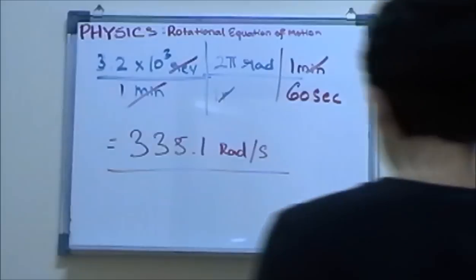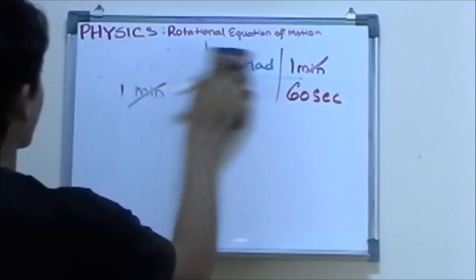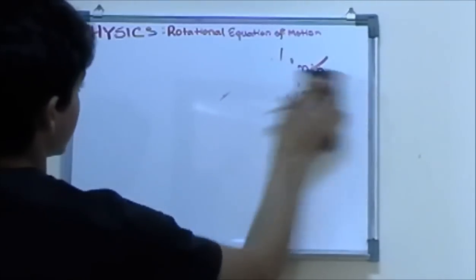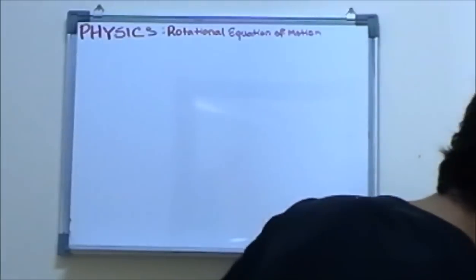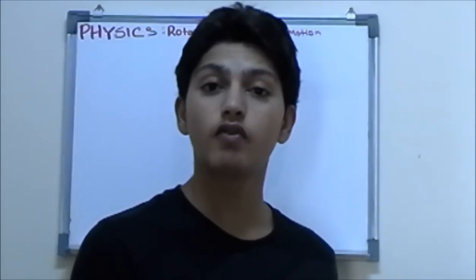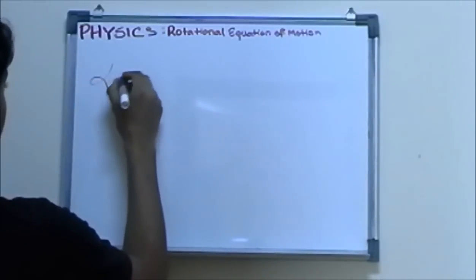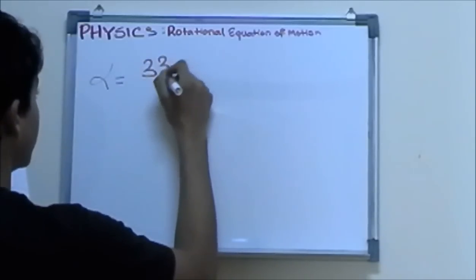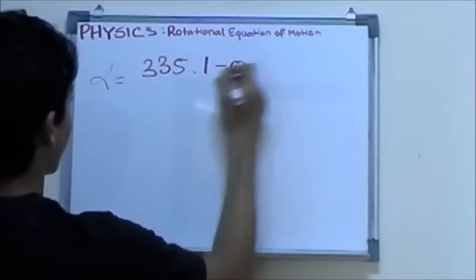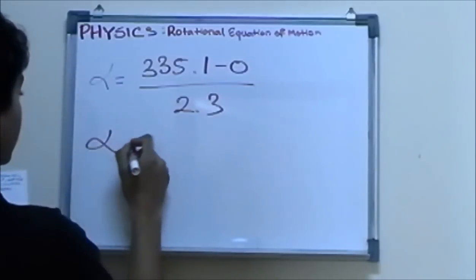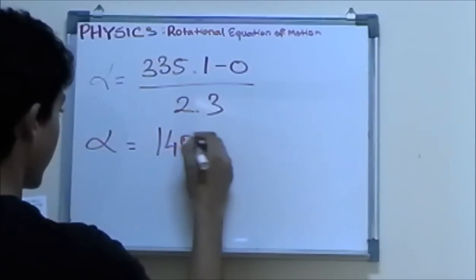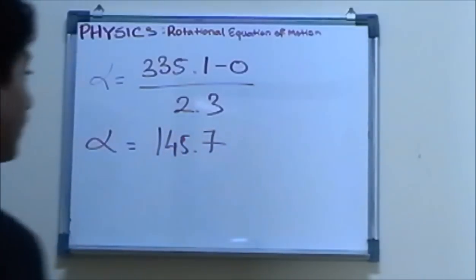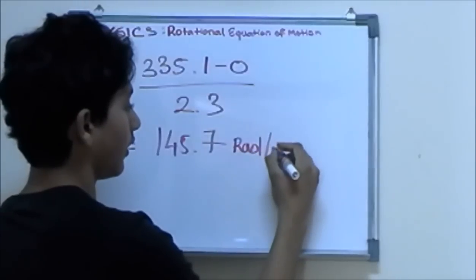Even though the problem only asks for the angle, we still need to find the angular acceleration first, since we need alpha to plug into the theta equation. Alpha equals (335.1 − 0) / 2.3, which gives us 145.7 radians per second squared.